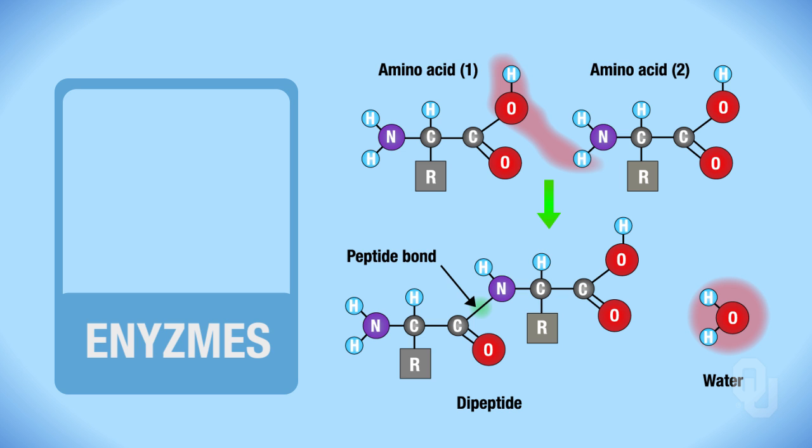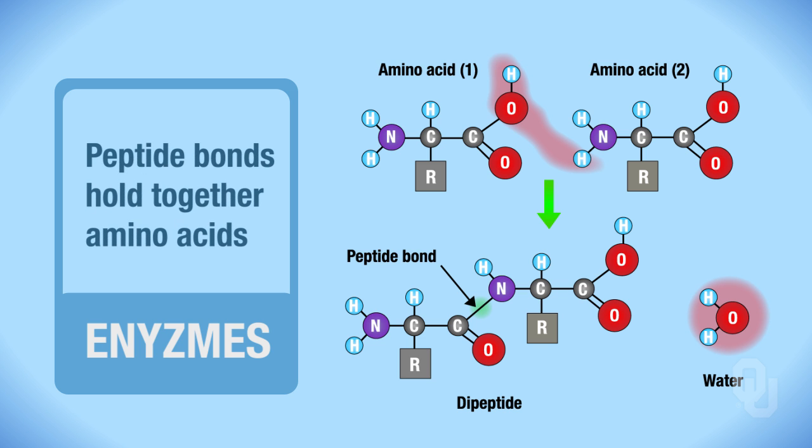And here you can see one amino acid. Here's a second amino acid. We're going to have a reaction that occurs that combines these two amino acids together, forming our enzyme. Enzymes are actually composed of more than just two amino acids, but this is just an example of how an enzyme or how a protein would even be formed. Remember that peptide bonds hold together amino acids.